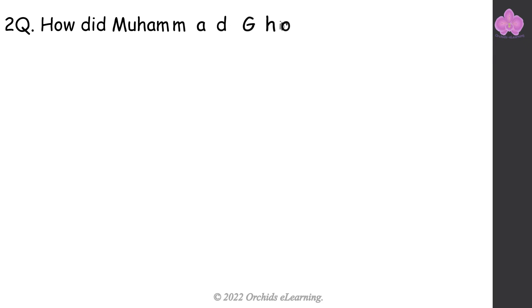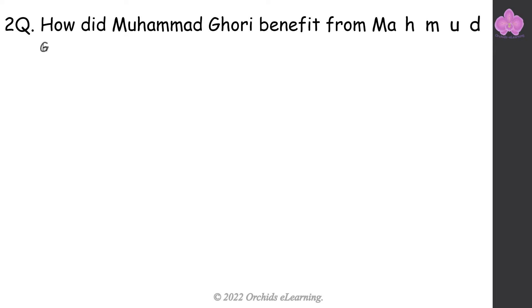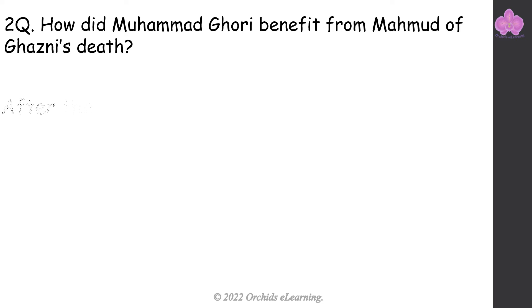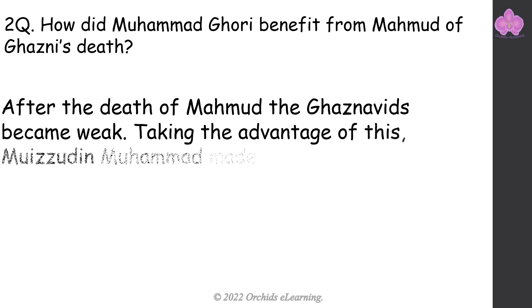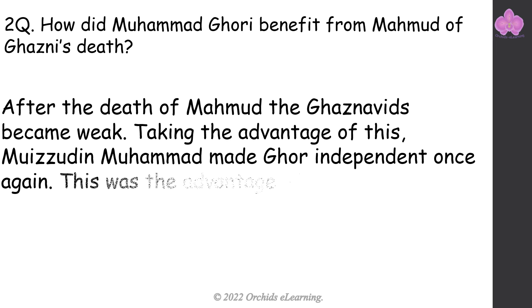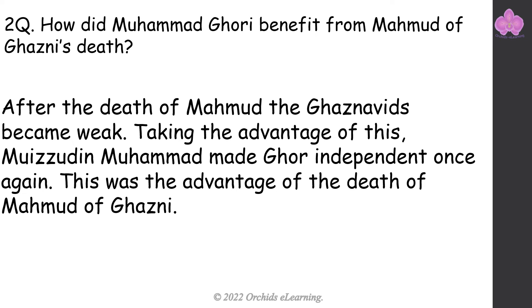How did Muhammad Gori benefit from Muhammad of Ghazni's death? After the death of Muhammad of Ghazni, the Ghaznavids became weak. Taking advantage of this, Muizuddin Muhammad made Ghore independent once again. This was the advantage of the death of Muhammad of Ghazni.